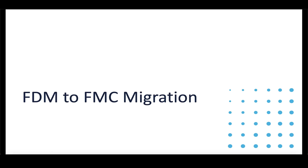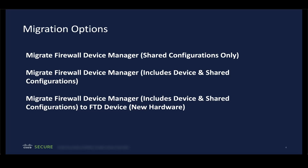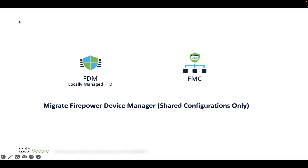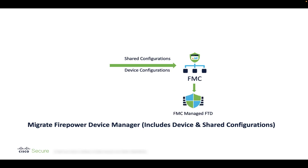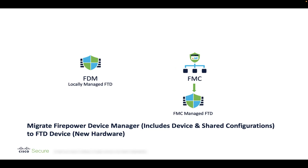Let's begin with FDM to FMC migration. There are three ways to migrate FDM configuration to FMC. First, we migrate only the shared configuration from FDM to FMC, which includes access policy, NAT, and objects. The second option is to migrate both the shared as well as the device-specific configuration, and post migration, we also have the option to migrate the device so that it becomes managed by FMC. The third option is to migrate the configuration from FDM to an FMC which already has an FTD managed by it, and all configuration will be associated with it.